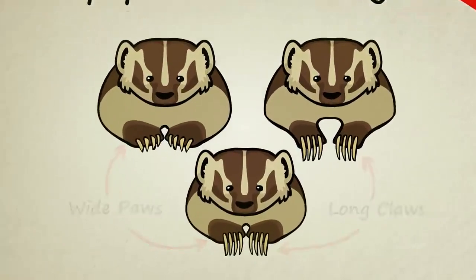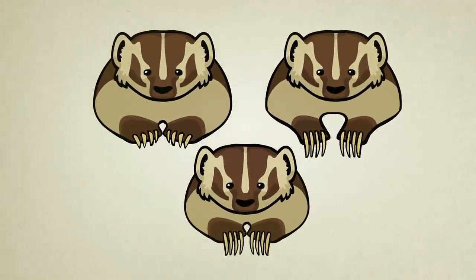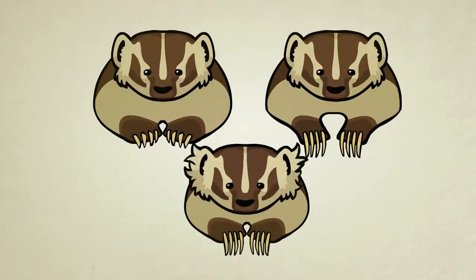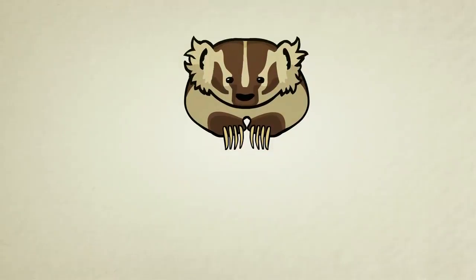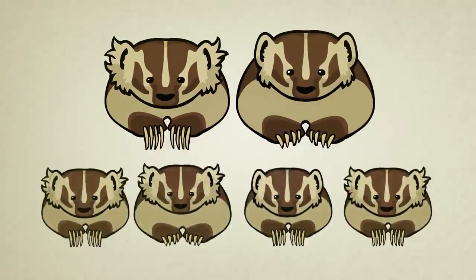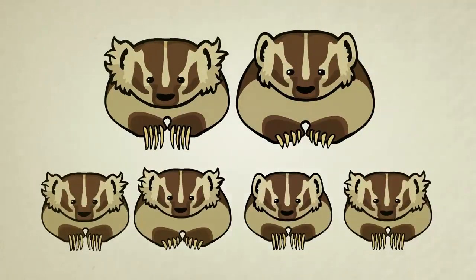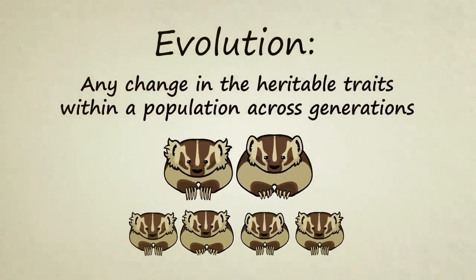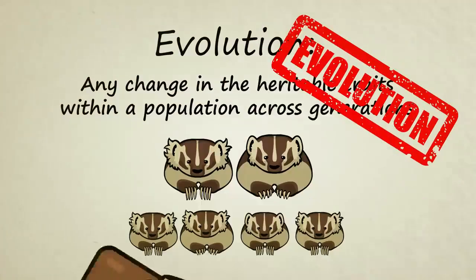Besides a unique recombination of her parents' traits, she might also have developed some completely new traits of her own due to DNA mutations — maybe extra hairy ears, for example. If she survives long enough to have kids, her DNA will combine with the DNA of her partner and she'll pass on those extra hairy ears to at least some of her children. Again, evolution has officially occurred.